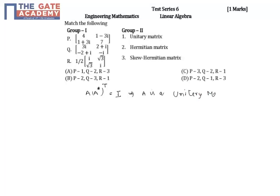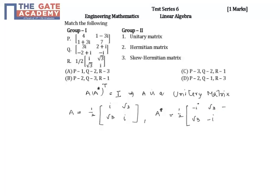For example, take the matrix A = (1/2) × [[i, √3], [√3, i]]. I want to check whether this matrix A satisfies the unitary equation. First I'll find A-conjugate: this equals (1/2) with all the i signs reversed, giving [[-i, √3], [√3, -i]].